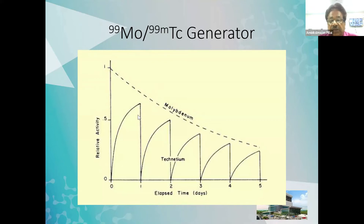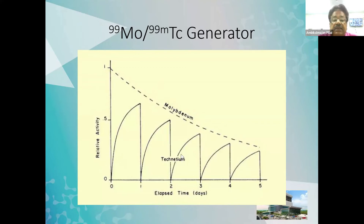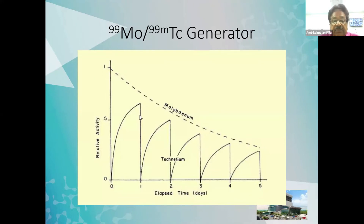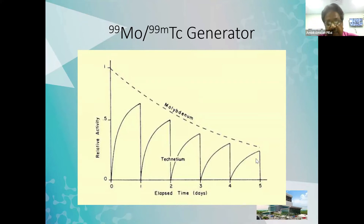We can do about five elutions from a technetium generator. On the fifth day, we will hardly have about 20% of the activity. That is why the nuclear medicine department or the radiopharmacist will have to plan all the studies depending upon the availability of technetium. Whatever studies need a larger amount of pertechnetate, those studies can be scheduled in the first two or three days. Those studies which need less activity are pushed to the later days.